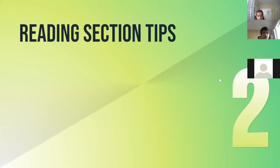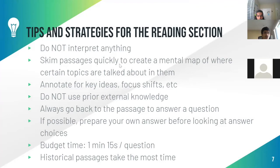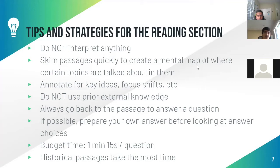Now for specific strategies for the reading section. The most important thing: do not interpret anything. The answer to a reading question will always be stated explicitly somewhere in the text — they will never require you to interpret. You should also skim passages quickly to get a mental map of where certain topics are discussed, so you can return to those sections more quickly when you see a question about them.